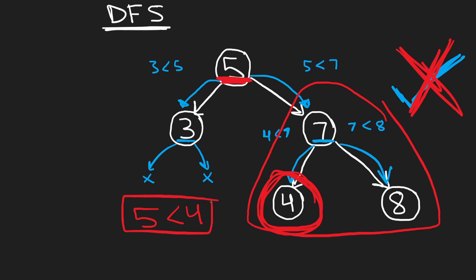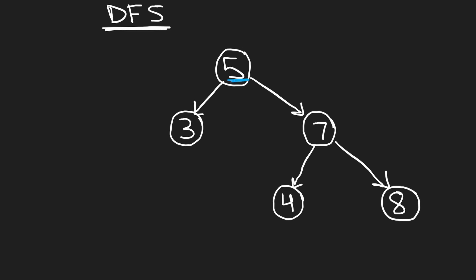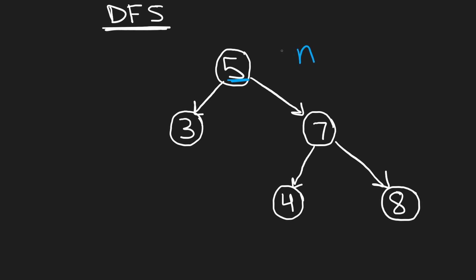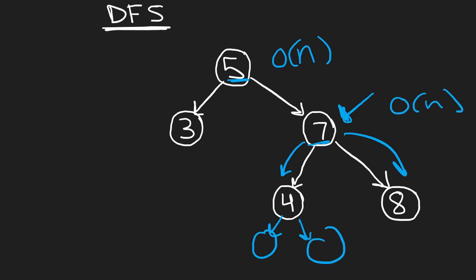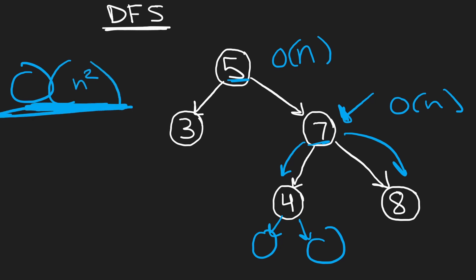Our brute force approach would be: for five, check every value in its left subtree and make sure each is less than five, then check every value in the right subtree and make sure five is less than each one. That's O(n) comparisons per node, and we'd repeat that for every subtree, making the overall time complexity O(n²). So can we do better than O(n²)?